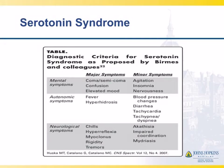Serotonin syndrome doesn't happen so often, but it does happen every now and then. People who are on multiple serotonergic medications can absolutely have alteration of mental status. They tend to be febrile, tend to have chills and increased reflexes, and they do have an acute confusional state. They are usually on multiple serotonergic agents.